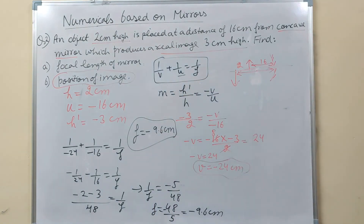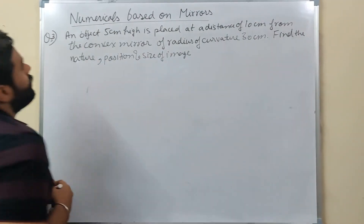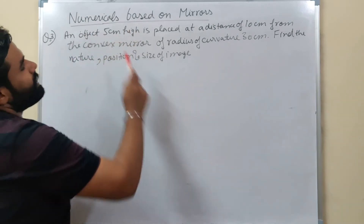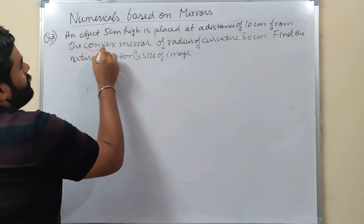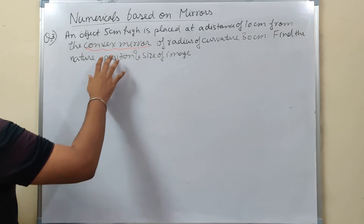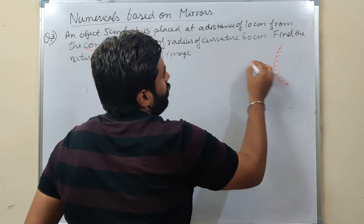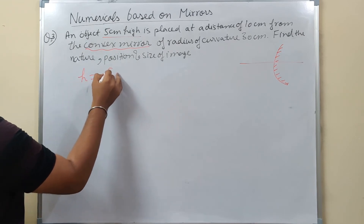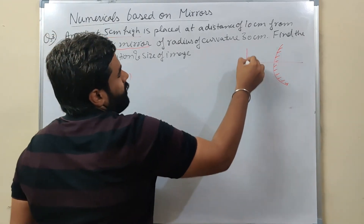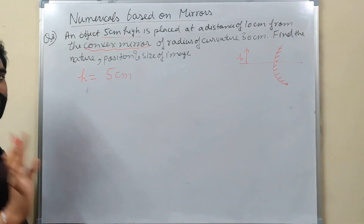Now let's come to the next numerical based on convex mirror. The next numerical: an object 5 cm high is placed at a distance of 10 cm from a convex mirror. Convex mirror has the inner polished surface and outer reflecting surface. Object height h = +5 cm (always above principal axis, so positive).